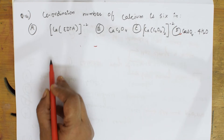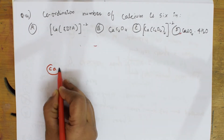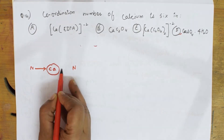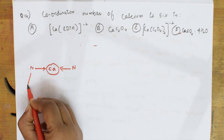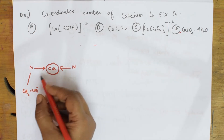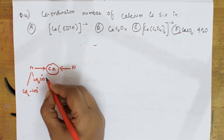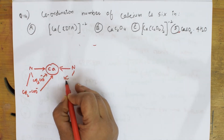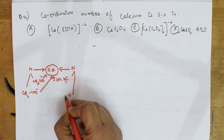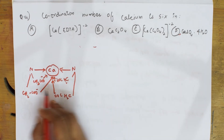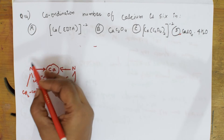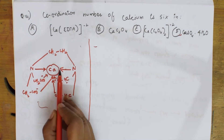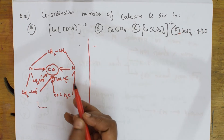Let us draw the structure. The central metal atom is calcium in the centre. In ethylenediamine tetraacetate, nitrogen here and nitrogen here — both linked to calcium. Tetraacetate means four acetate groups: CH2-COO⁻, one more CH2-COO⁻, and two more CH2-COO⁻ groups — all coordinated to calcium. Counting the surrounding donor atoms: one, two, three, four, five, six — the coordination number is six.